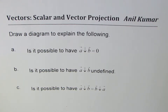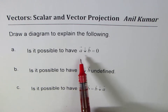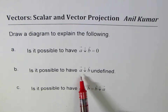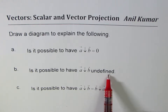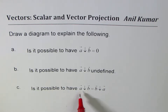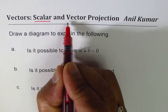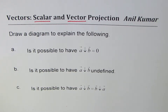We will explore scalar and vector projection. The question is: draw a diagram to explain the following — Part A: is it possible to have projection of vector a on b equal to zero? Part B: is it possible to have projection of vector a on b undefined? Part C: is it possible to have projection of vector a on b equal to projection of b on a? When we talk about projection of vectors, there are two cases: scalar projection, which concerns only magnitude, and vector projection, which includes magnitude and direction.